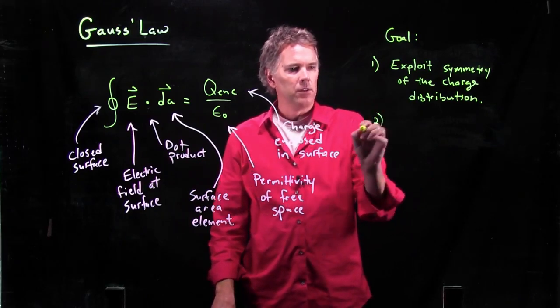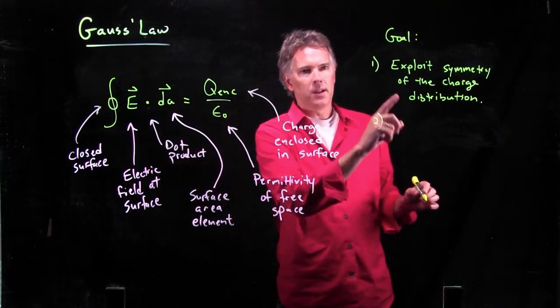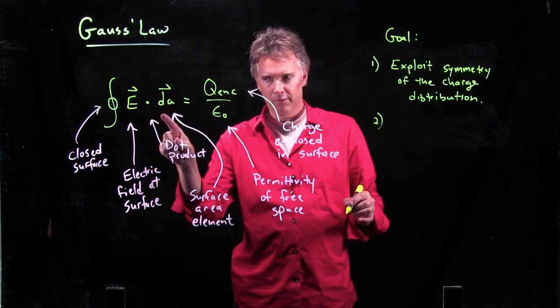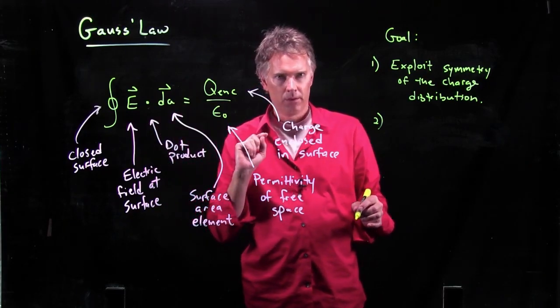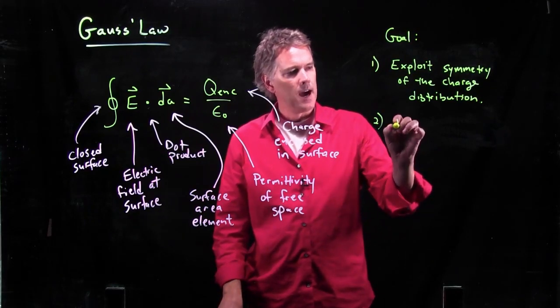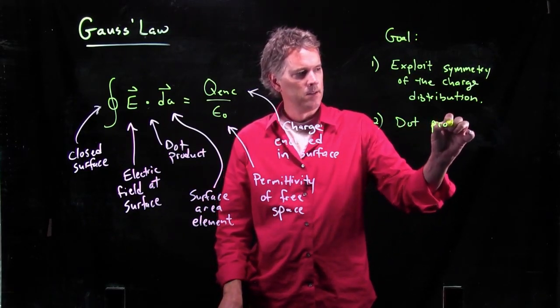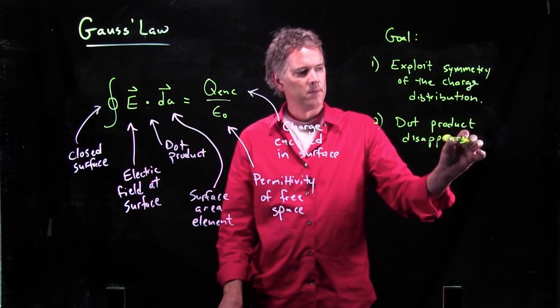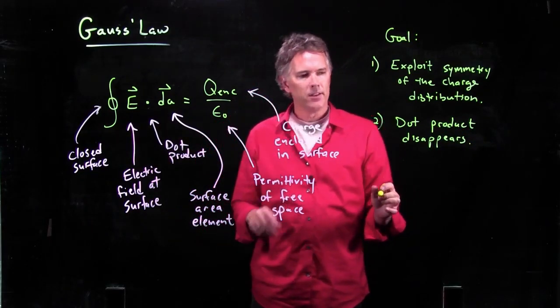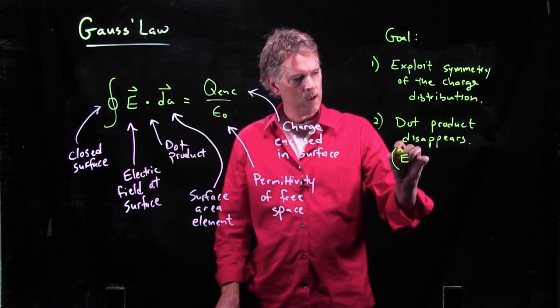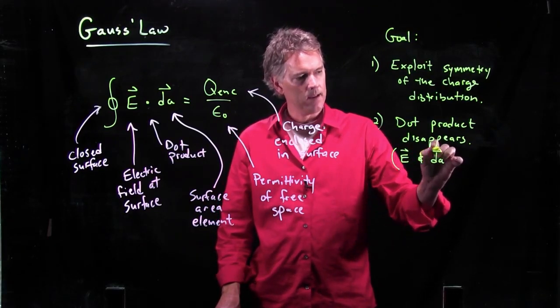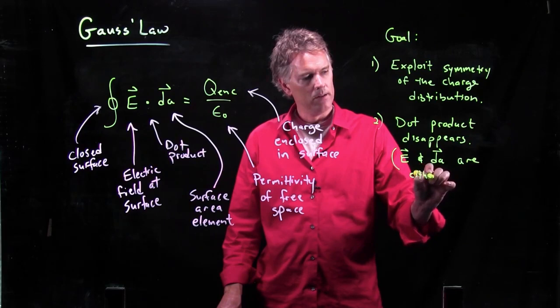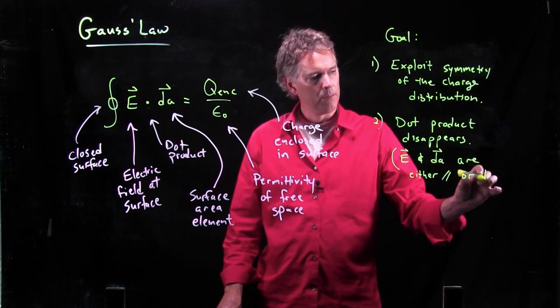The second thing is, once we exploit that symmetry, we want to stick in the E field at the surface and dot it with the dA, such that the dot product disappears. Now what do we mean by that? What we mean is that E and dA have to be either parallel or perpendicular.